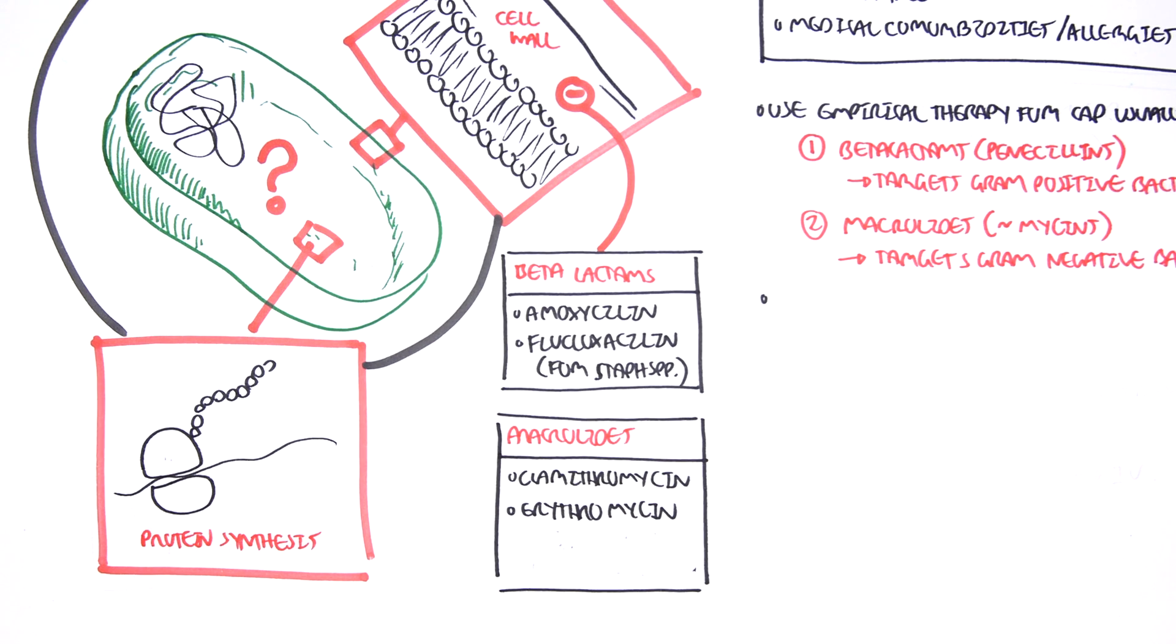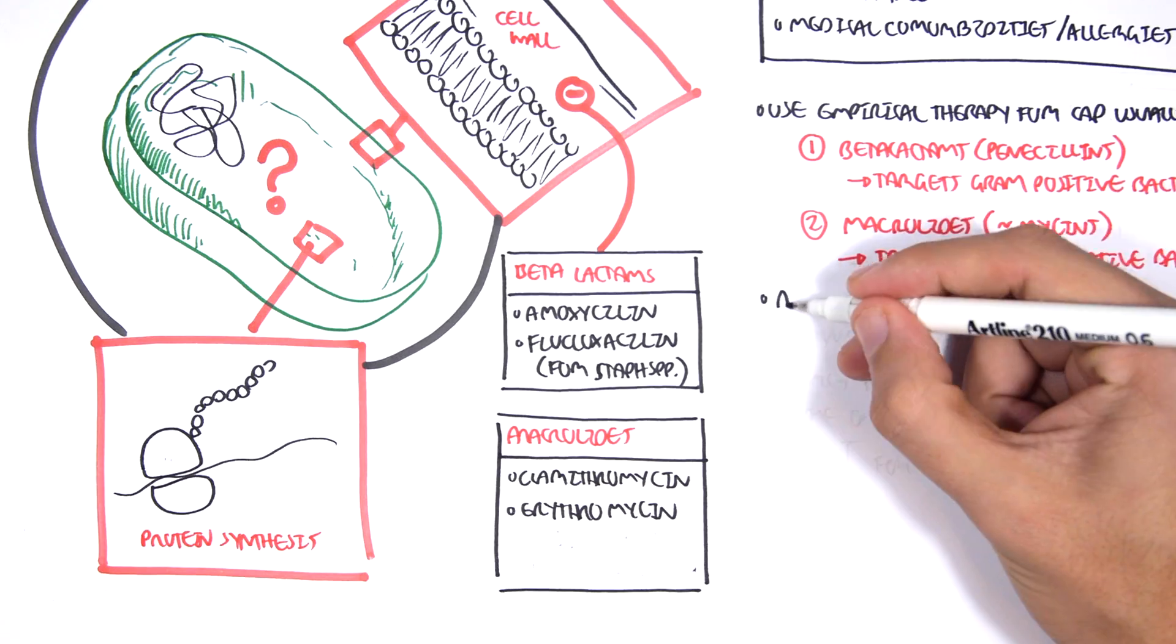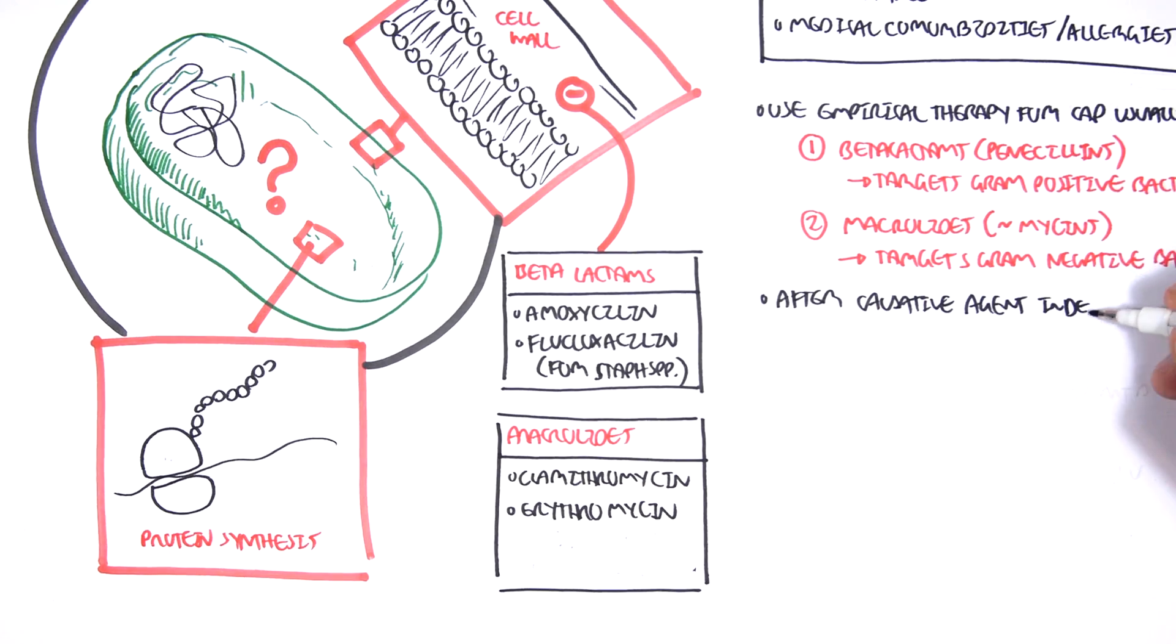After you use empirical therapy, the causative agent might be identified following investigations, such as your blood cultures, your x-rays or whatever. And so after you've identified the causative agent, and if it is a bacteria, and you know what type of bacteria it is, you have to change your antibiotic that will specifically target that bacteria.